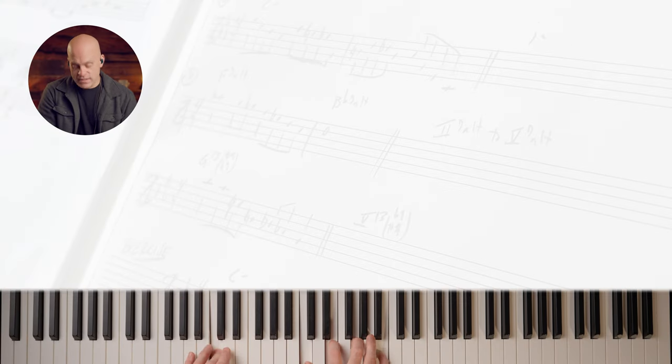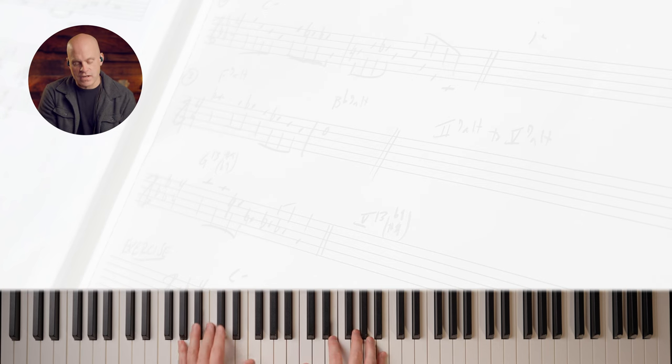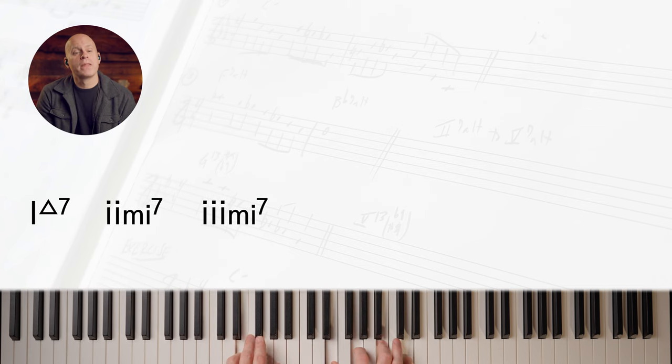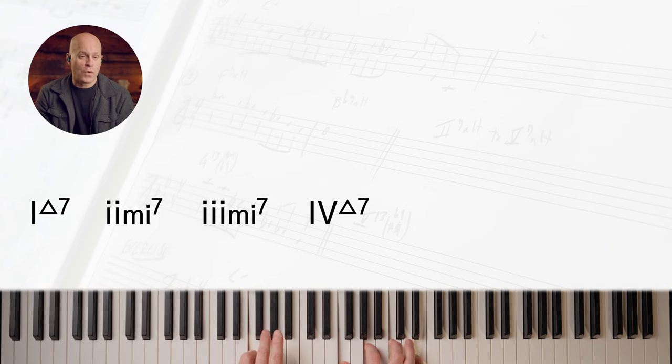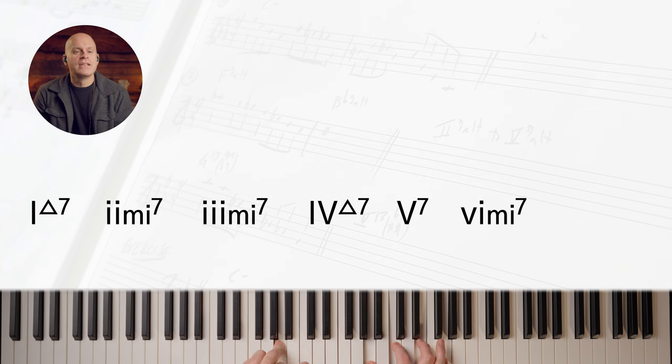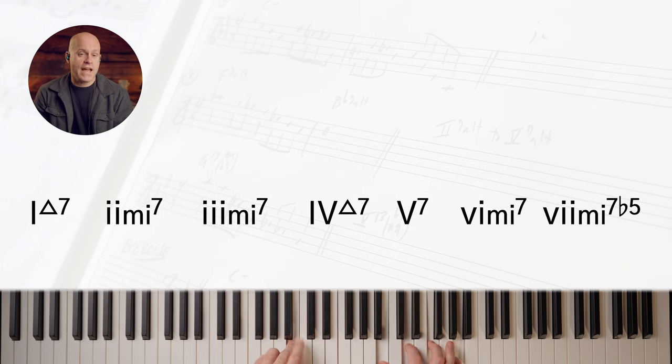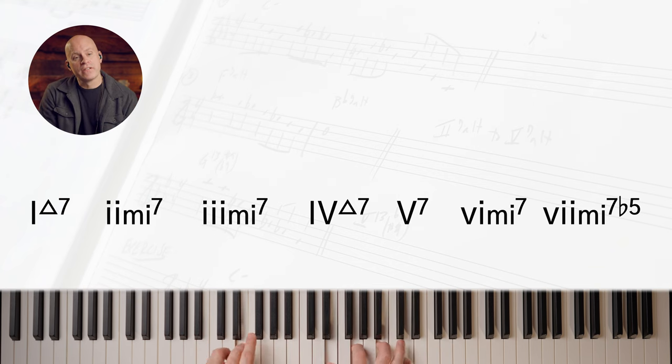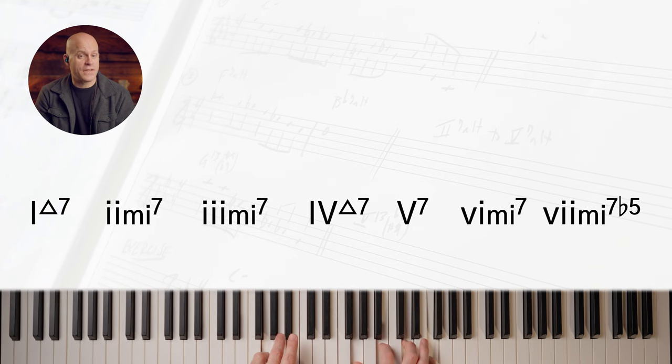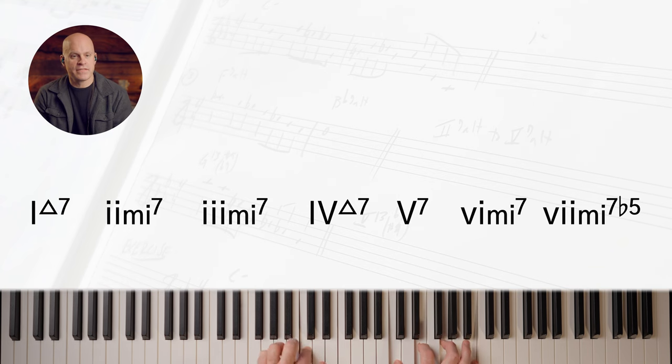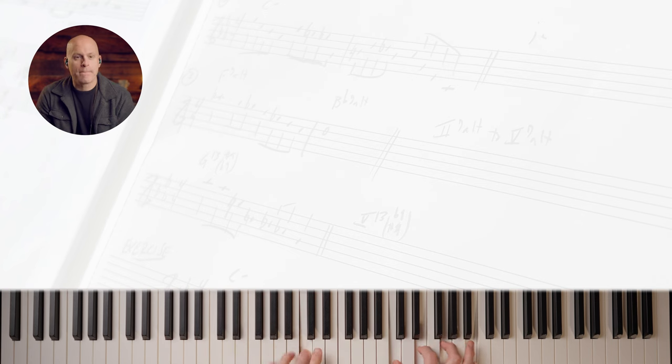If we look at them in order in the key of C, we got one major seven, two minor seven, three minor seven, four major seven, five is always dominant mostly, six minor seven, seven half diminished, and then back up to one. One major seven, two minor seven, three minor seven, four major seven, five seven, six minor seven, seven half diminished, and then the octave.